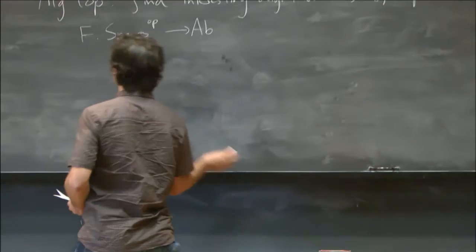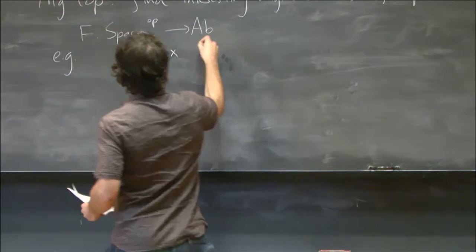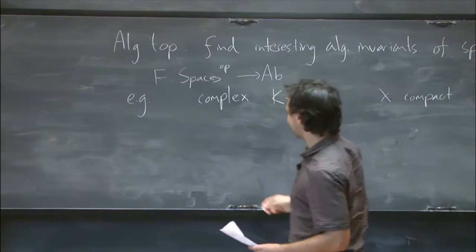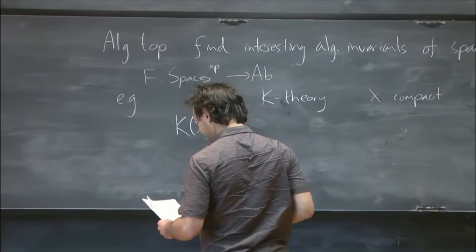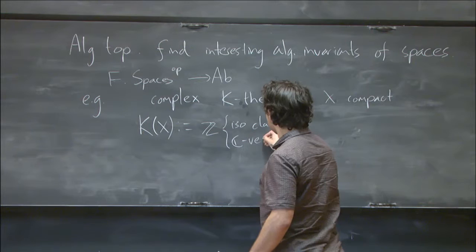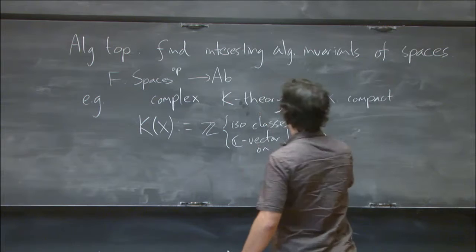So what's an example of such an invariant? One example of such an invariant is complex topological K-theory. So if X is a compact space, then I'll define K of X to be the free abelian group on isomorphism classes of complex vector bundles on my space.